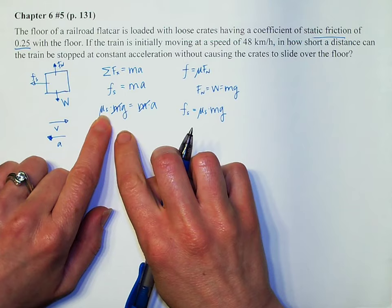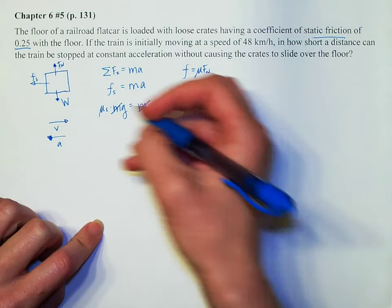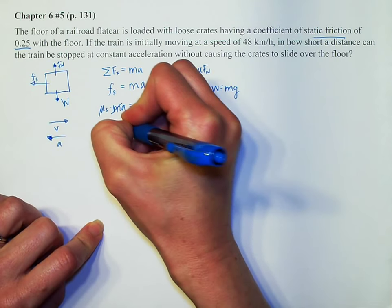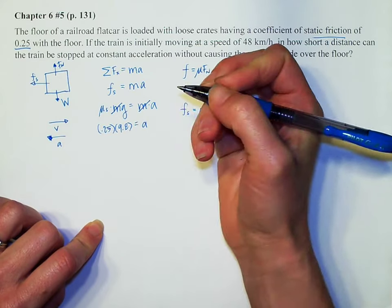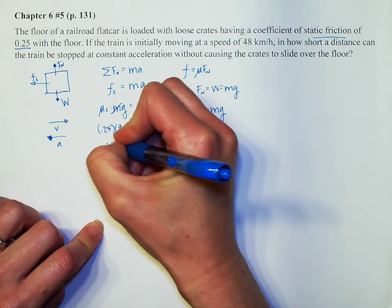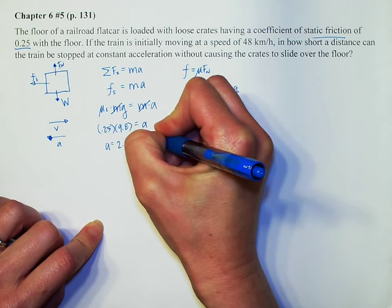We know the coefficient of static friction, we know gravity, and therefore we can solve for acceleration. How exciting. So we have 0.25 times 9.8 equals our acceleration, which tells me that my acceleration is 2.45 meters per second squared.